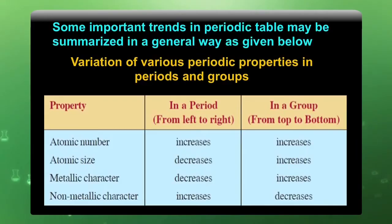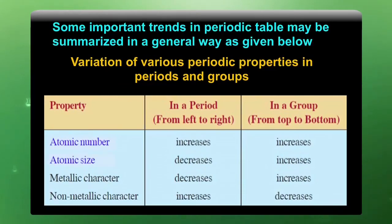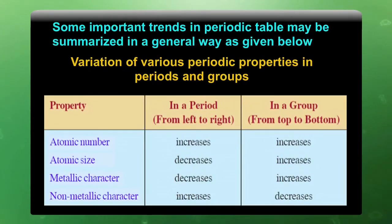This table indicates how atomic number, atomic size, and metallic and non-metallic character increase or decrease in groups or periods.